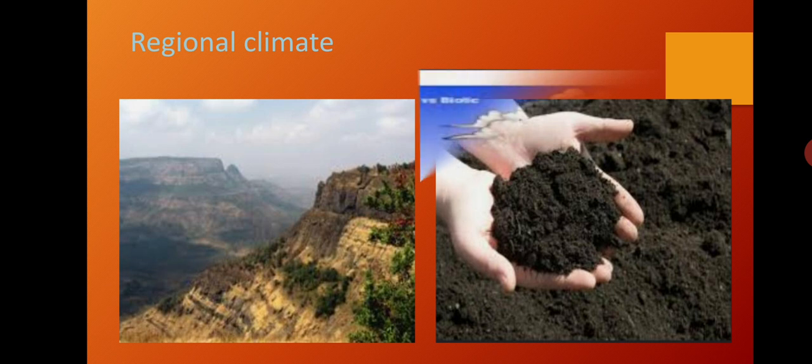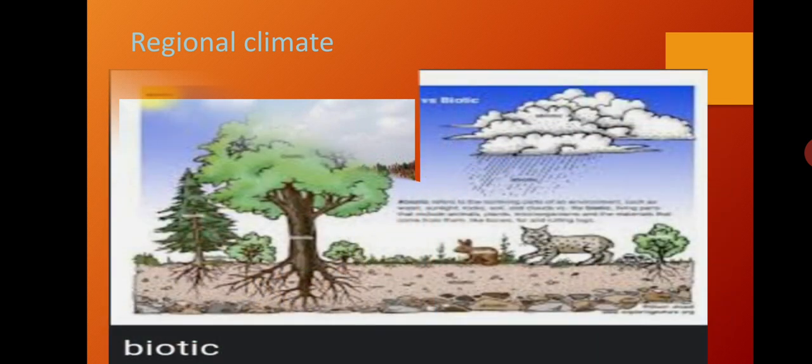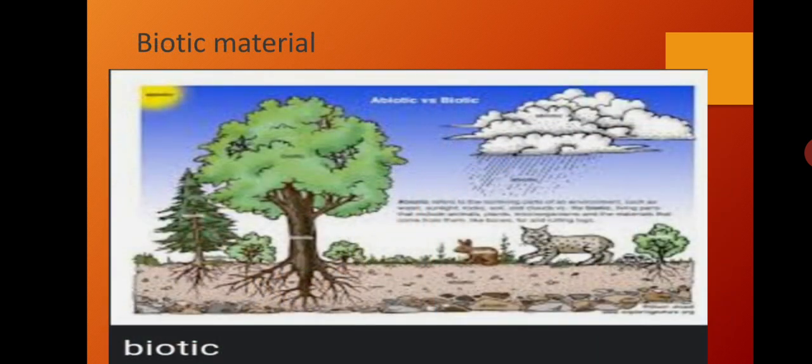The third factor is biotic material. The weathering of rock turns it into powdery material, but this powdery material is not soil. To turn such powdery material into soil, it is necessary that biotic material gets mixed into it.